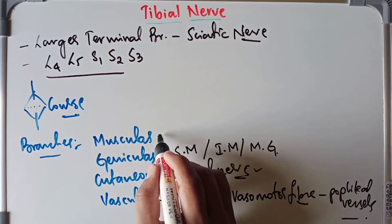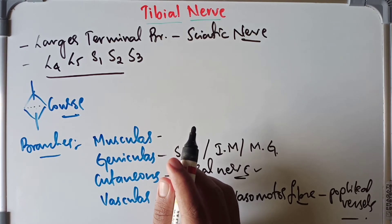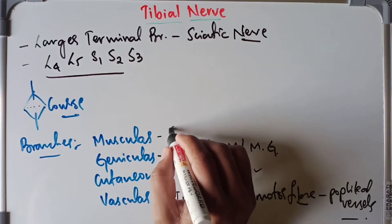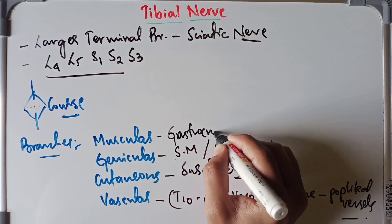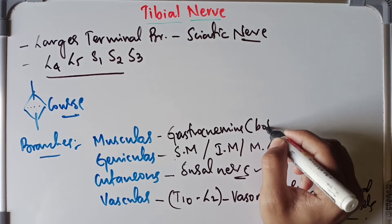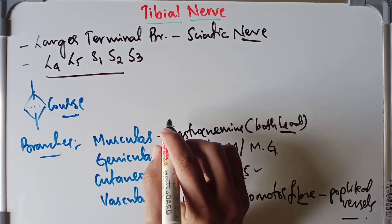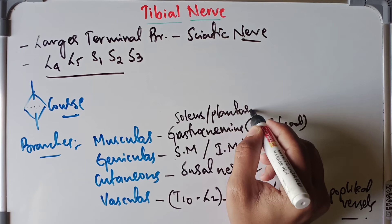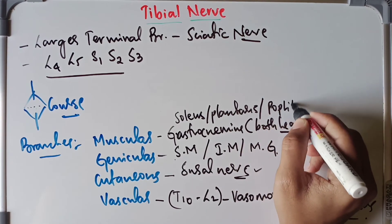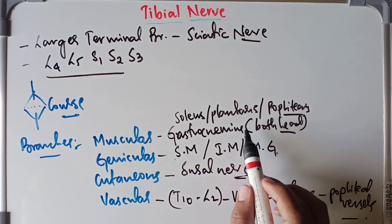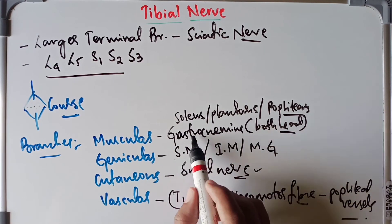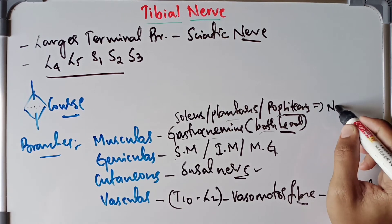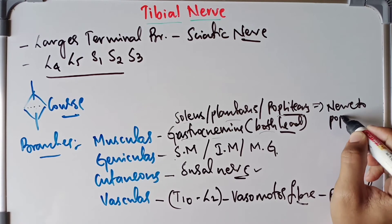Now moving on to the muscular branches. The muscular branches supply the gastrocnemius — both the medial and lateral heads — as well as the soleus muscle, plantaris, and popliteus. So the tibial nerve supplies gastrocnemius both heads, soleus, plantaris, and popliteus. The popliteus supply involves a branch called the nerve to popliteus.